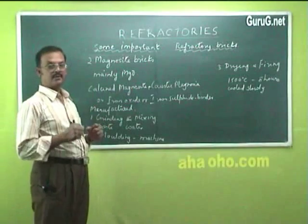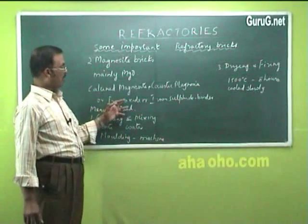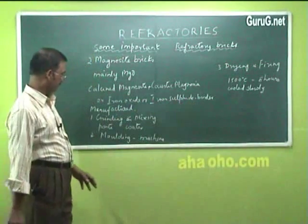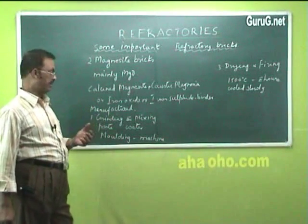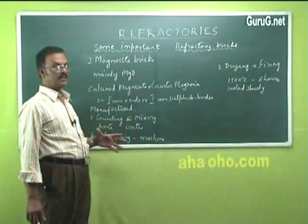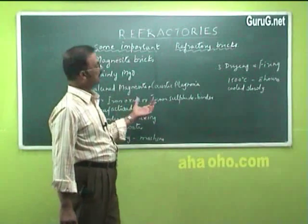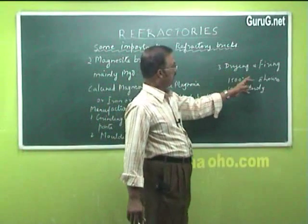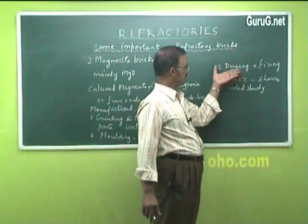Calcined magnesite and caustic magnesia are the prime materials required for manufacture. These two are ground into very fine particles and mixed. Iron oxide or iron sulphide is added, which acts as a binder. Next, water is added and the material is made into a paste for easy molding. The molding of the material to the required shape is carried out using a machine. The material is then dried slowly to remove moisture and fired at 1500 degrees centigrade for 8 hours, after which it cools slowly.